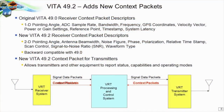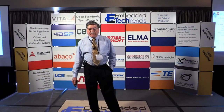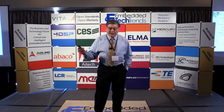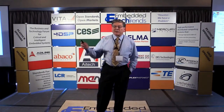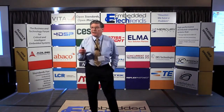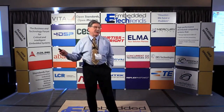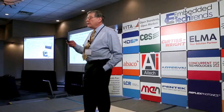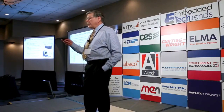In Vita 49.0, the context packets carried information along with the signal. Vita 49.2 adds even more context information about the signal, and it's backwards compatible to 49.0. Context packets are also being used to support data transfers from transmitters — not just coming back from receivers, but also how the transmitter is behaving and what mode it's operating in. So that's a new extension of what context packets really do.